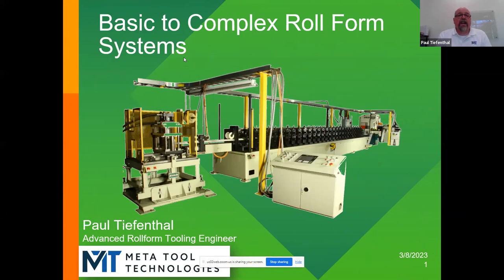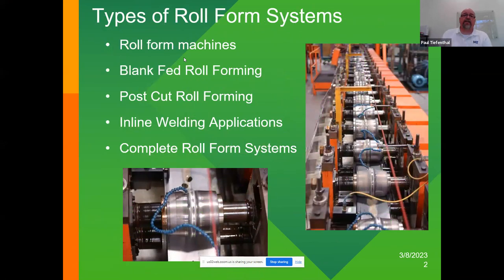What we'll talk about today is Basic to Complex Roll Forming Systems. We'll talk about a lot of the different systems, how the component goes from basic up to the very complex. There are some automotive examples here, but there's also a lot of building trade content as well. First, we're going to talk about the machinery you'll see in the types of roll forming: blank cut, post cut, inline welding applications, and complete systems.